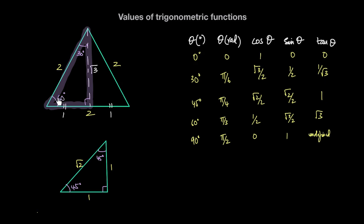Similarly, for theta equal to 60 degrees or pi over 3 radians: cosine of 60 is the side adjacent divided by the hypotenuse, which is 1 over 2. Sine of 60 is the side opposite — root 3 — divided by the hypotenuse, giving root 3 over 2. And tan of 60 degrees, or pi over 3 radians, is root 3 divided by 1, which is just root 3. We can always draw this equilateral triangle to recall values for cosine, sine, and tan when theta is 30 or 60 degrees — pi over 6 or pi over 3 radians respectively.